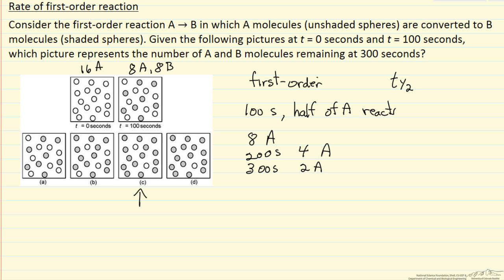And so therefore, C is the correct answer for the best representation of what we expect at 300 seconds.